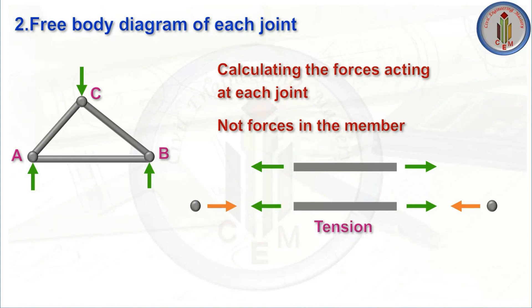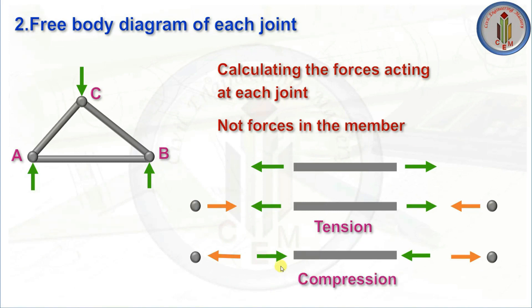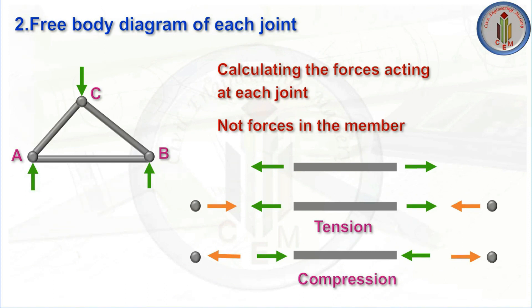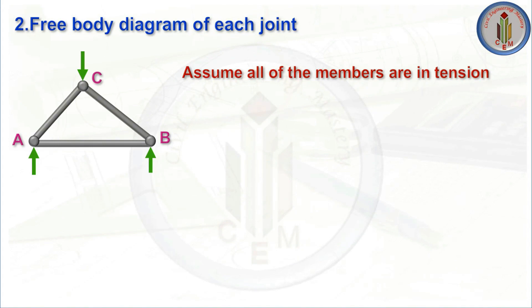Similarly, if a member is in compression, it will exert a force on the joint acting towards the joint. Since we never know in advance which members are in tension and which are in compression, we assume all members are in tension and draw the internal forces pointing away from each joint.